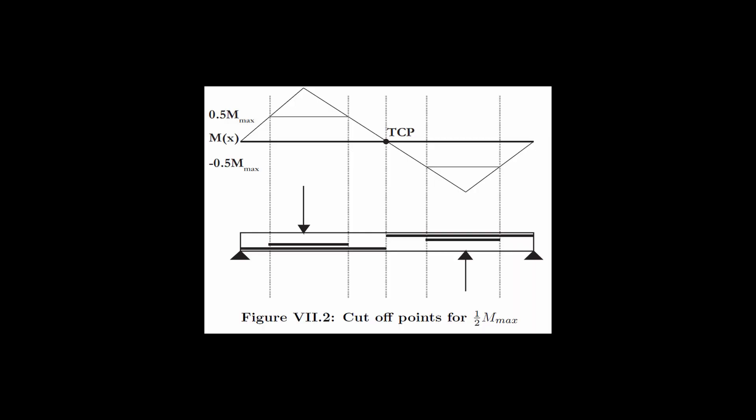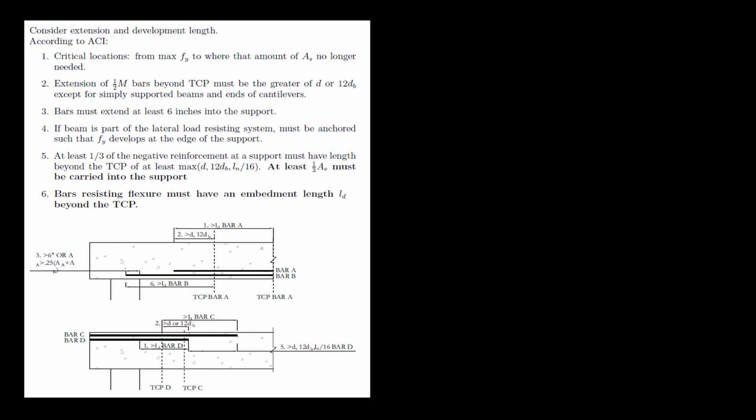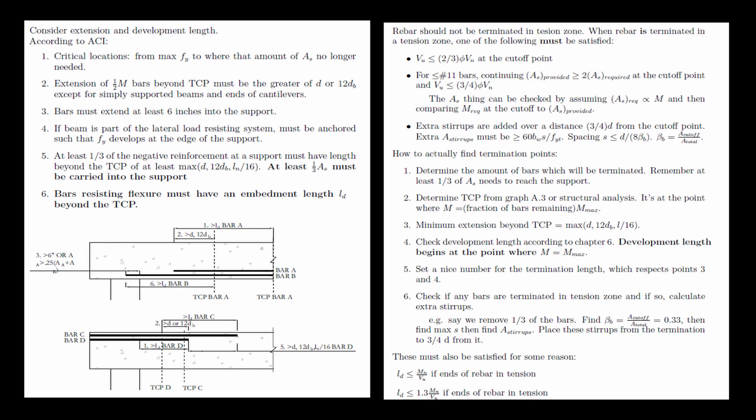To use our freshly calculated LD, we need to talk about theoretical cutoff points, which are the topic for another video. These are the places in the beam where reinforcement is no longer needed, because the moment has reduced. Actual cutoff points follow some rules depending on how many bars you cut off, but for the subject at hand, it just boils down to add the embedment length to the theoretical cutoff point.